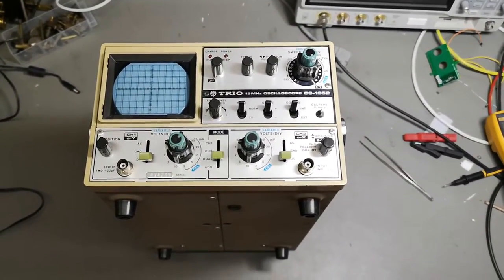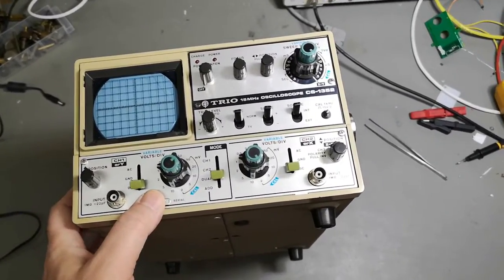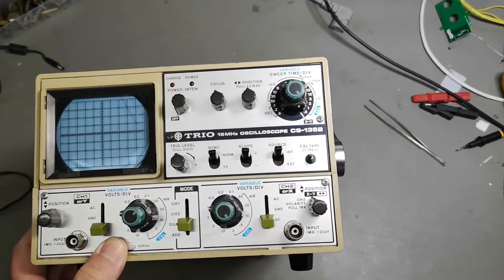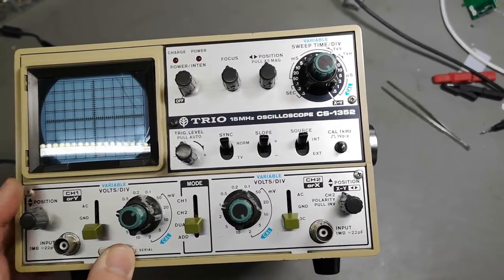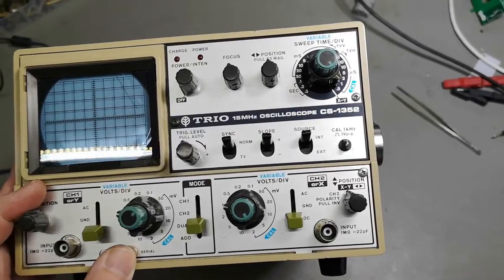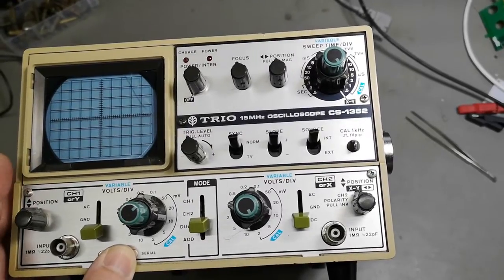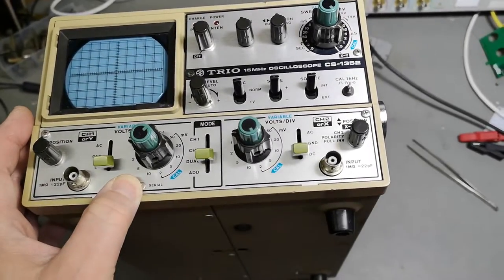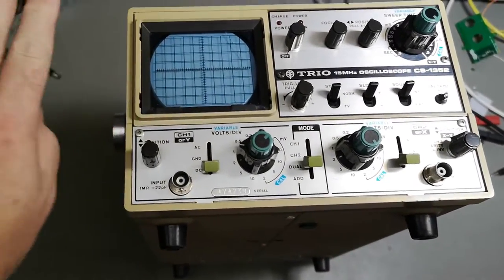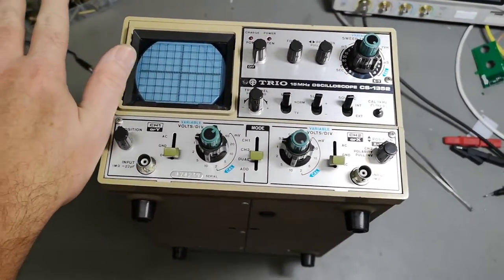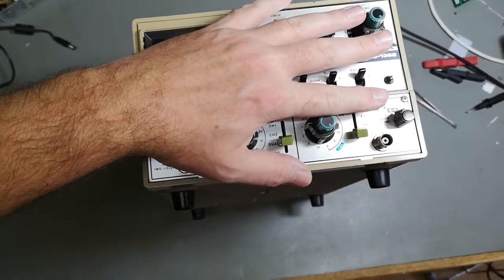Welcome to a new test and teardown video. We're playing with another oscilloscope today, a TRIO 15 megahertz dual trace CS1352. I don't know if it works or not yet, so that's going to be fun.